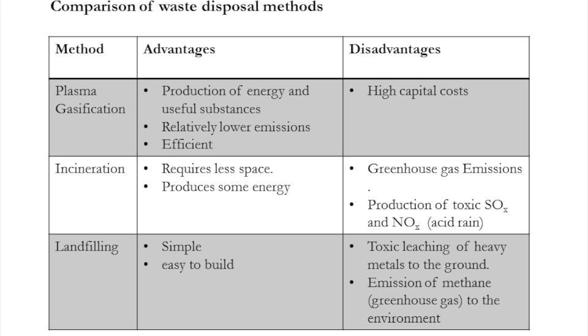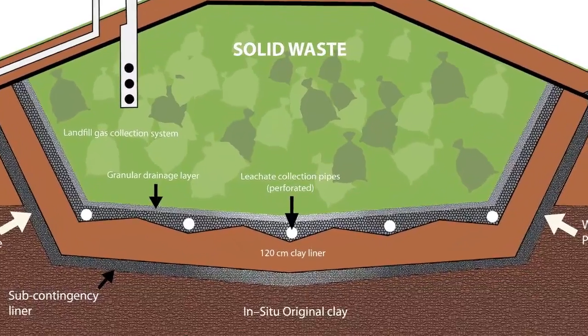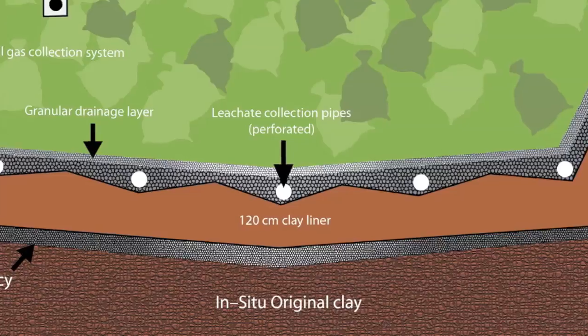Some of the concerns with landfilling involve toxic leaching of heavy metals such as mercury from those new CFL bulbs or other carcinogens from the landfill into groundwater. The effects can be partially offset by using impenetrable liners.